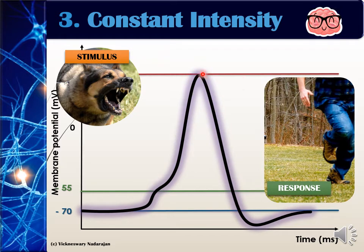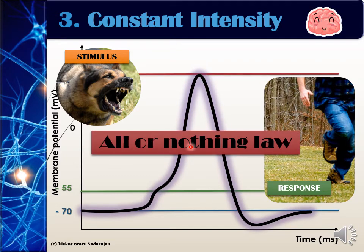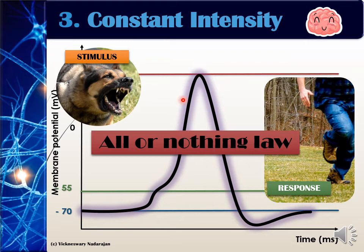This action potential is based on what is known as the all-or-nothing law. That means if the stimulus only brings you to, say, negative 56 millivolts, nothing is going to happen — that is the 'nothing' part of the law. But the moment your threshold potential of negative 55 millivolts is achieved, immediately you will get your action potential. There is never a case where you pass negative 55 millivolts and depolarization only reaches positive 20 then goes down — it will always reach the maximum of positive 40. That is the 'all' part of the law.